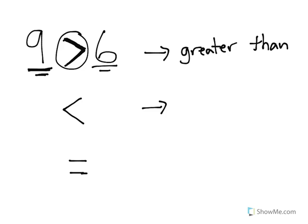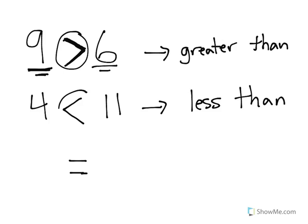The second symbol here is our less than symbol. We use this to say things like 4 is less than 11. As you can see, it's true — the number 4 is less than 11. If I have $4, that's less than $11. Notice how the sign is open towards the greater number. The sign will always be open towards the greater number.